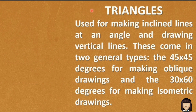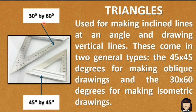Triangles are used for making inclined lines at an angle and drawing vertical lines. These come in two general types: the 45 by 45 degrees for making oblique drawings, and 30 by 60 degrees for making isometric drawings.